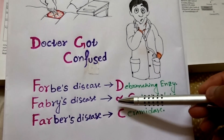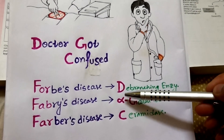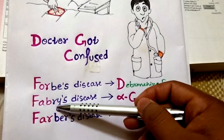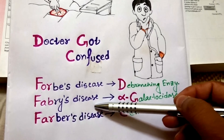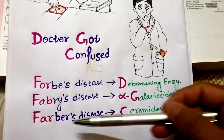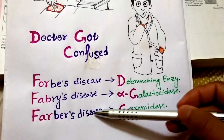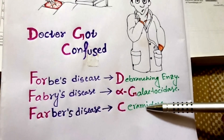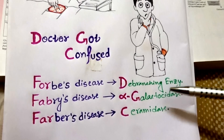Forbes' disease is for deficiency of debranching enzyme, Fabry's disease is for deficiency of alpha-galactosidase, and Farber's disease is due to the deficiency of ceramidase.